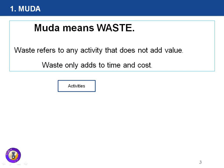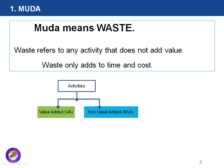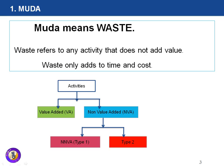Activities in any organization can be divided into two types: value-added activities or non-value-added activities. In a typical organization, non-value-added activities contribute to more than 95% of the activities, while value-added activities contribute only around 5%. Non-value-added activities can be further divided into two types: Type 1 and Type 2 Muda. Type 1 Muda refers to necessary non-value-added activities.